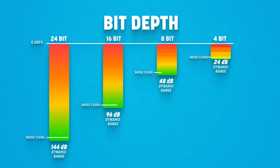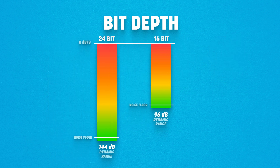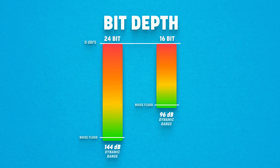So how about bit depth? Well, bit depth determines the amount of possible amplitude values we can record for each sample. Amplitude is also often referred to as level. If your DAW is set to record at 24 bit, then it can take the snapshots of the incoming audio with more accuracy than if it were set to 16 bit — actually millions more values.